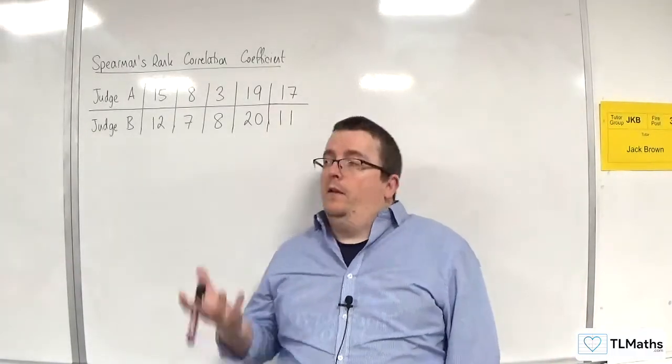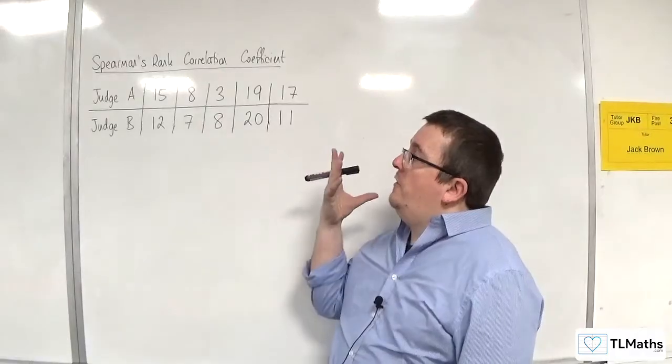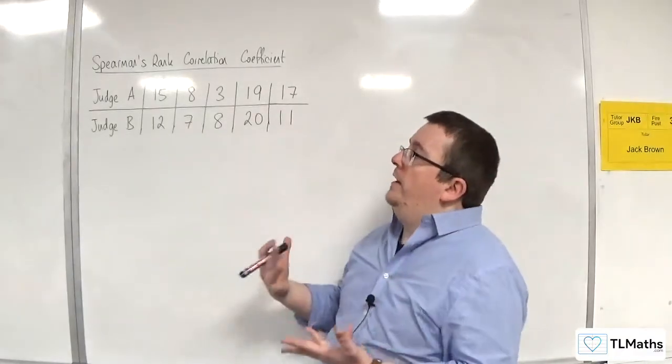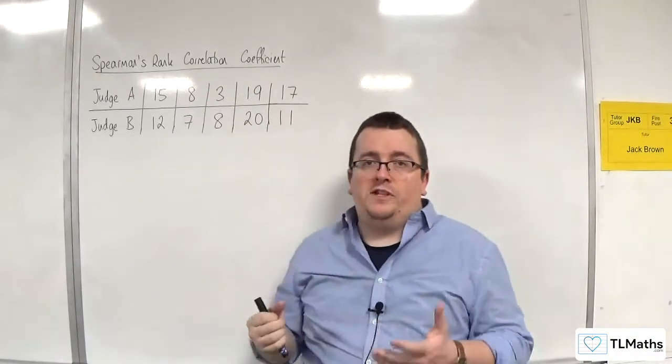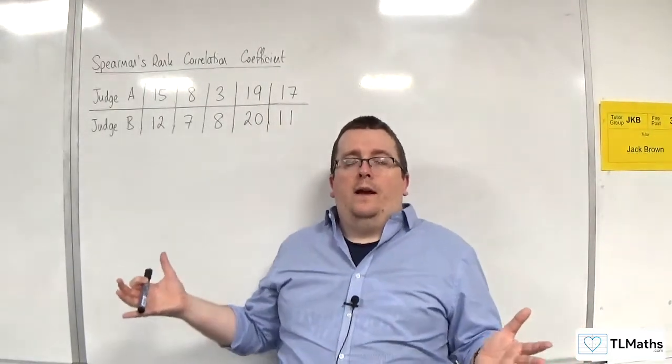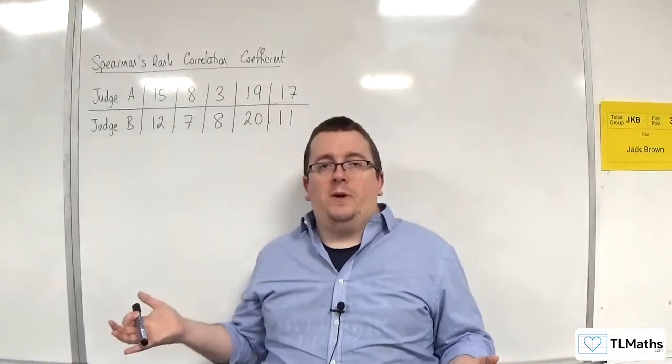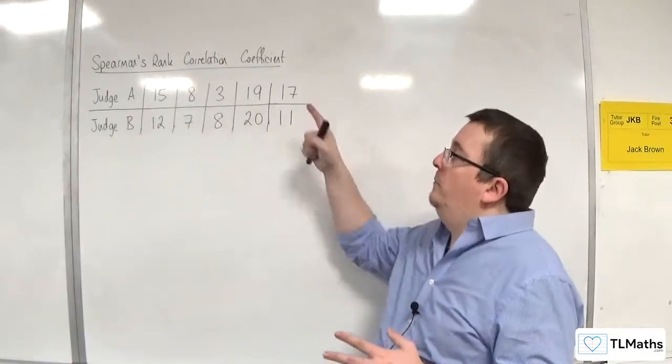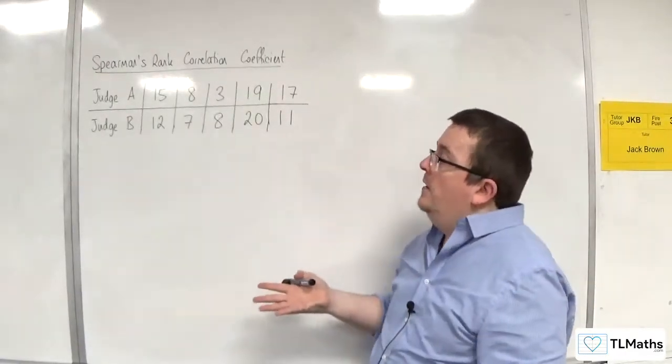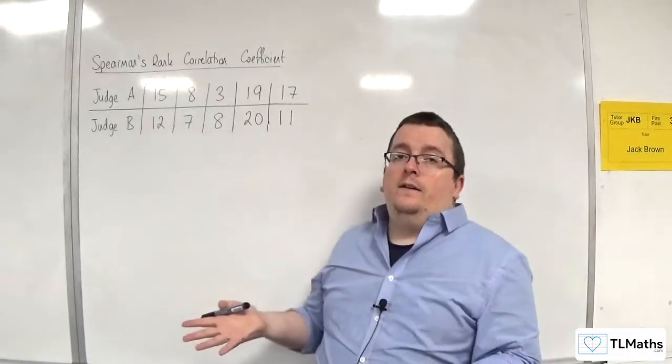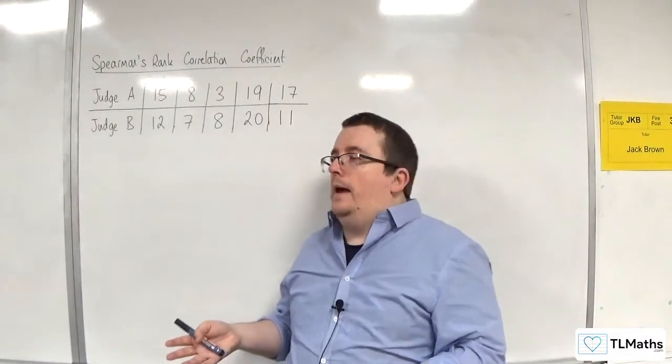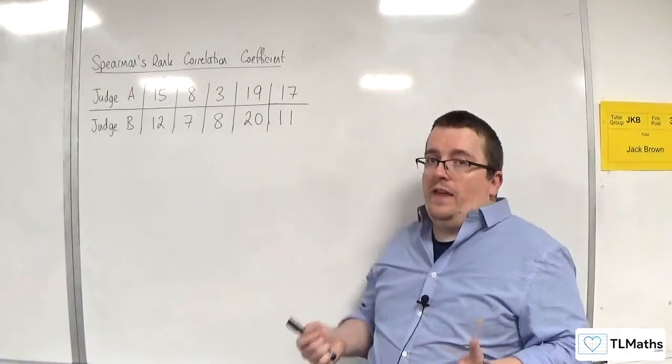Well, firstly, the first problem here is that there is no underlying population. So it's not like there are hundreds and hundreds of contestants that Judge A has already judged and given a score to out of 20, and this is a random sample from that. That is not the case.